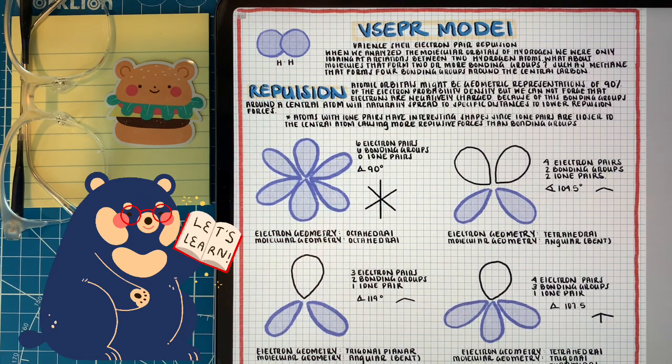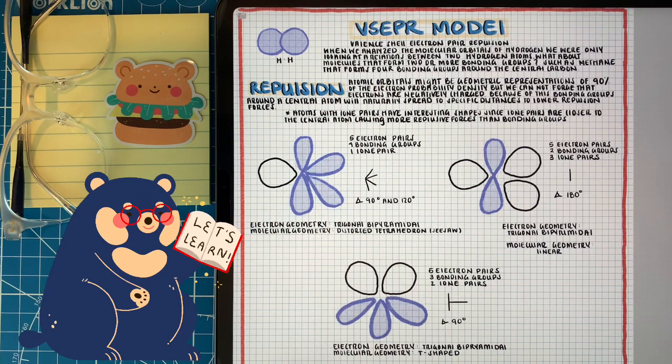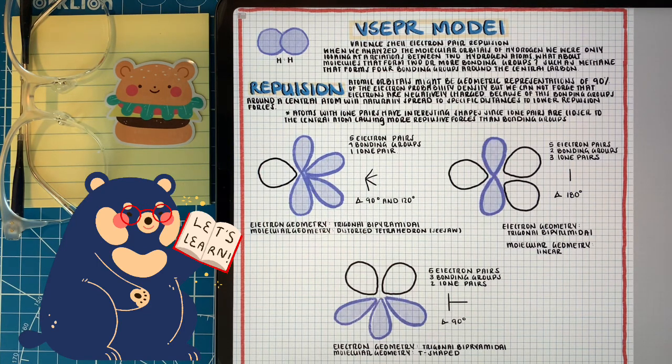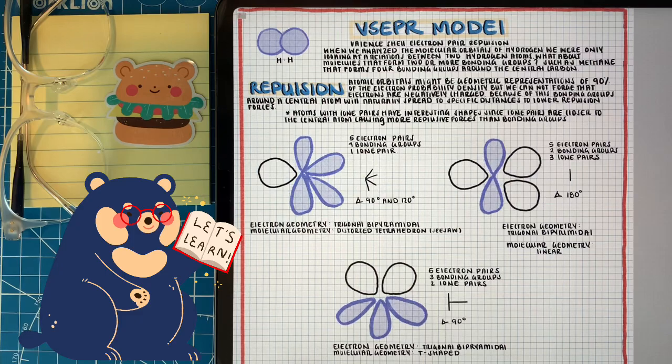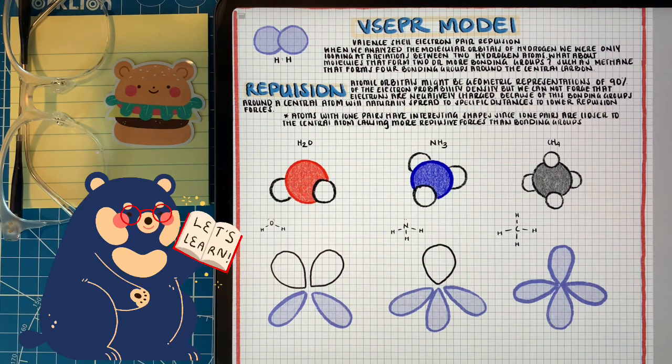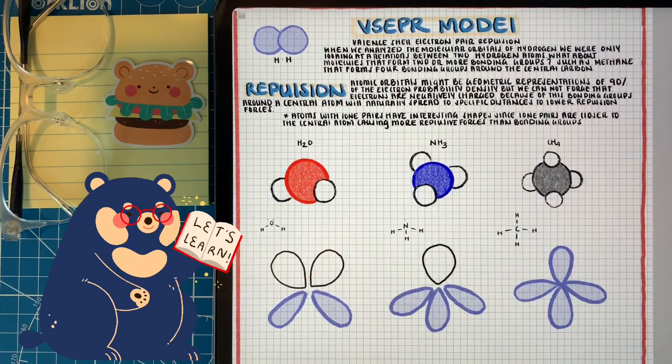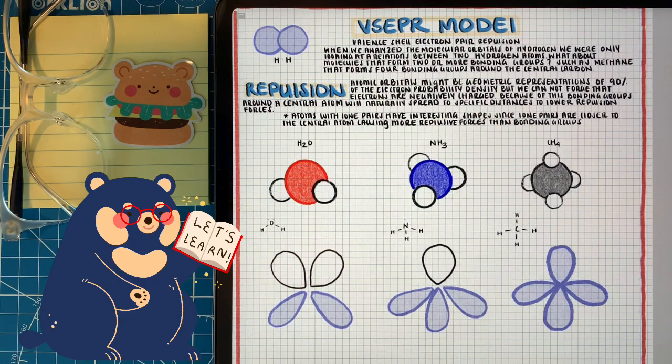This is why when we have lone pairs, we have geometries with bent shapes, that the angles are slightly disordered. When we're trying to predict the molecular geometry of a certain molecular compound or bond, we have to know the central atom, the amount of lone pairs that central atom has, and the number of bonding groups. We have three examples, three compounds showing their three different geometries. You have water with two lone pairs, ammonia with one lone pair, and methane with zero lone pairs.